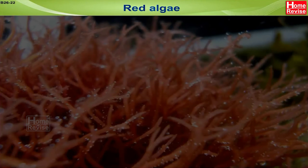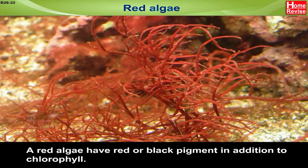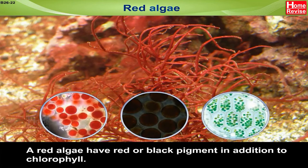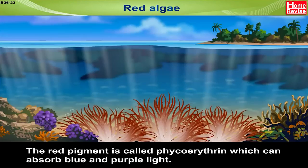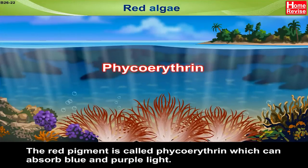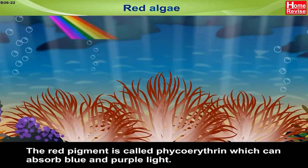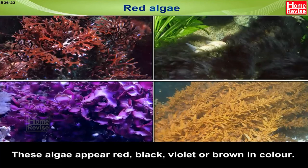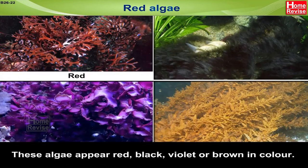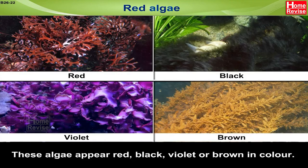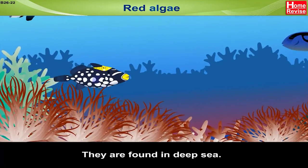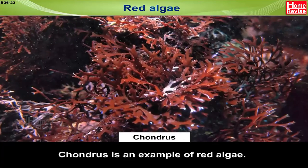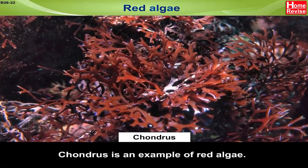Red algae have red or black pigment in addition to chlorophyll. The red pigment is called phycoerythrin, which can absorb blue and purple light. These algae appear red, black, violet or brown in colour. They are found in the deep sea. Chondrus is an example of red algae.